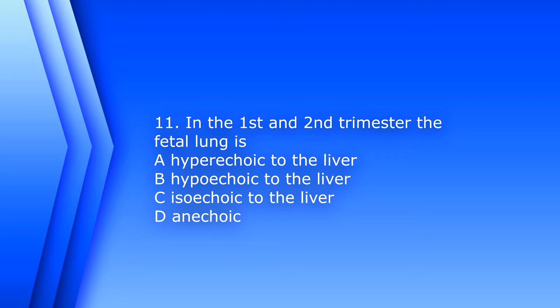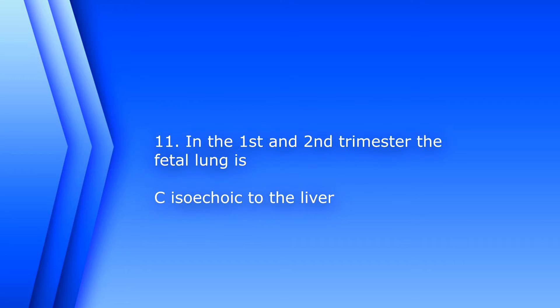Question 11. In the first and second trimester the fetal lung is: A. Hyperechoic to the liver. B. Hypoechoic to the liver. C. Isoechoic to the liver. Or D. Anechoic. The answer is C. Isoechoic to the liver. So the liver and lung in the first and second trimester should roughly have the same echogenicity.